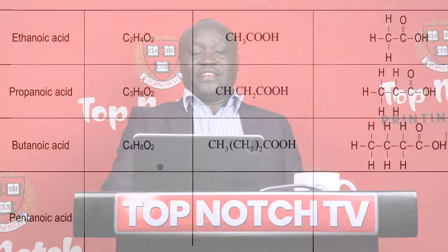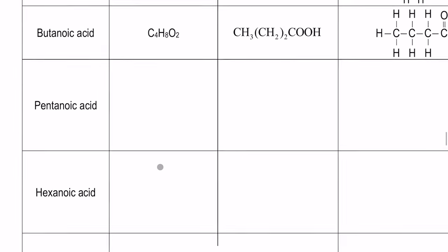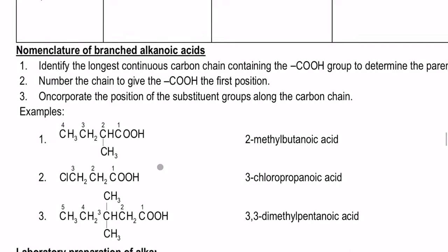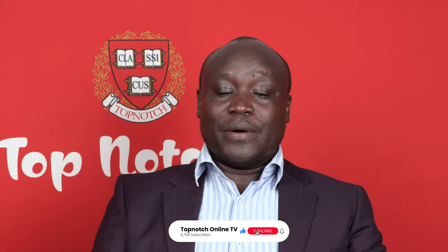You can see on our screen clearly the structures as they appear up to butanoic acid, which is normally the acid found in rancid butter. Just like the other homologous series, we also name alkanoic acids by identifying the longest continuous carbon chain that contains a COOH group, which determines the parent. Then you number the chain to give the COOH group the first position — regardless of where it is, numbering should always start from that particular end. Other substituent groups may also appear in the carbon chain and are named using the same rules applied in the previous homologous series.